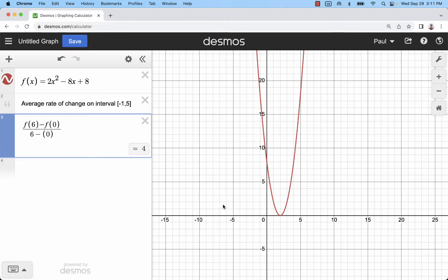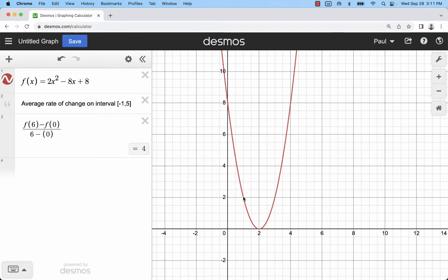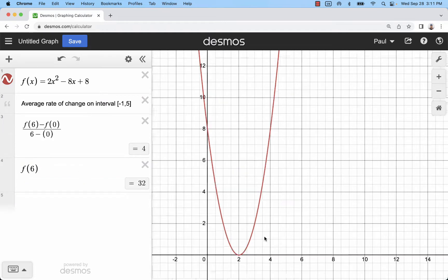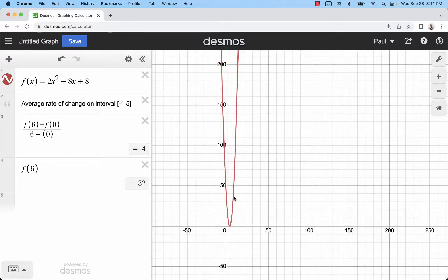6 and 0. And that's an average rate of change of 4. So it's going up 4 over 1 on average. That's starting at the (0, 8) and going over to the (6, 32). So that would be way out up here for that 32.